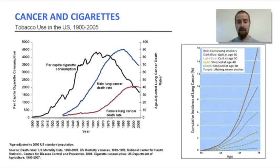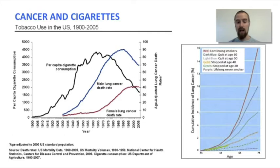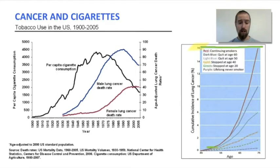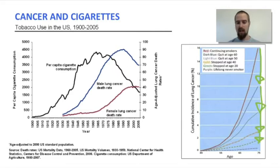This graph shows the likelihood of developing lung cancer with age. The red line represents people who continue to smoke for their entire life, whereas the dark blue line represents people who stopped smoking at age 60, and the light blue line represents people who quit at age 50. If we continue down, we see the line for people who quit smoking at 40, then at 30, and finally for people who never smoked. As you can see, not everyone who smokes gets lung cancer, and not everyone who avoids smoking avoids getting lung cancer. But the longer you smoke, the more likely it is that you will develop lung cancer, and the sooner you quit, the better your chances will be of avoiding it. Quitting always improves your odds, no matter how long you've been doing it.